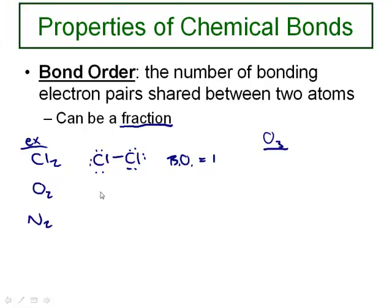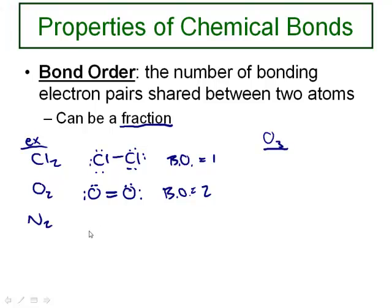For oxygen, if I draw its Lewis structure, each oxygen has two pairs of non-bonding electrons and two pairs of electrons shared between them. The bond order here would be two, because it has a double bond. Likewise, for nitrogen, which has a triple bond, you'd expect it to be three.